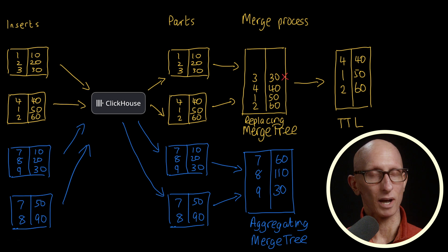So the main takeaway across all these three examples, replacing MergeTree, time to live, and aggregating MergeTree, is that the data transformation work is done in the background as part of the merge process. The work on the write path is kept intentionally light and efficient, which means ClickHouse has very high write throughput.